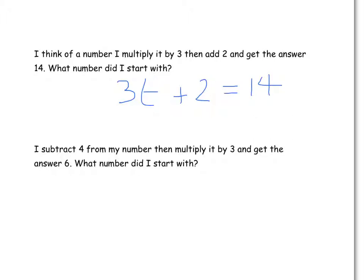Now, we can solve this equation by doing the inverse function. So remember, what we're aiming for is to get t's on one side and numbers on the other. So we need to subtract 2 from both sides first. So we're going to have 3t equals 12. So that's 3 times the number equals 12. So we need to divide by 3. So t is going to be equal to 4.